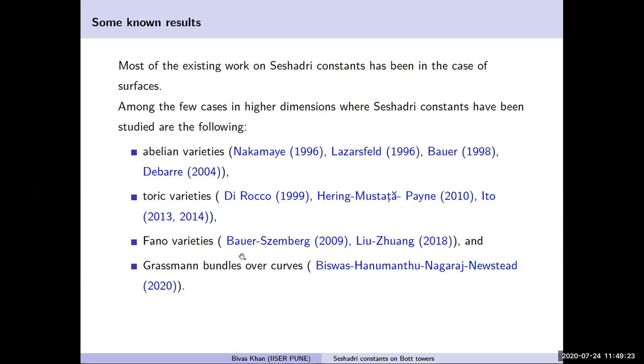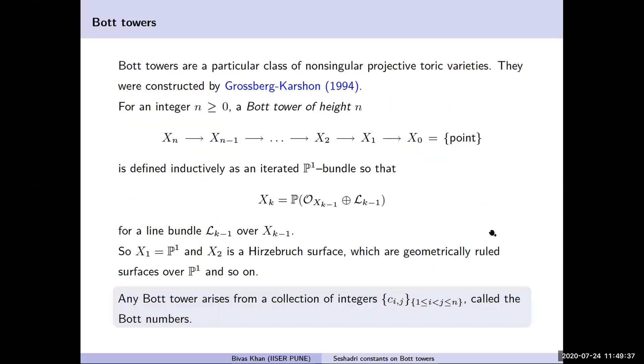For Fano varieties, there is work by various authors like Bauer, Szemberg, Liu, Zhang and so on. We are interested in Bott towers, which is a particular class of non-singular projective toric varieties. They were actually constructed by Grossberg and Karshon. A Bott tower is a tower starting from a point X_0, then X_1, and so on.